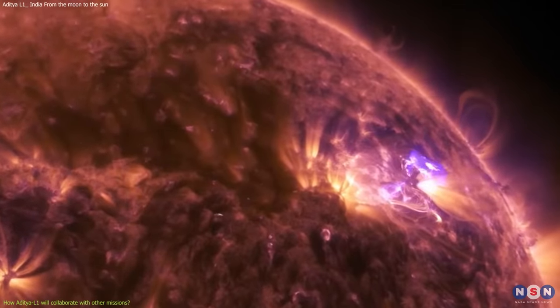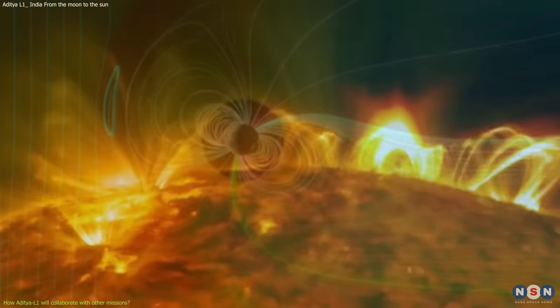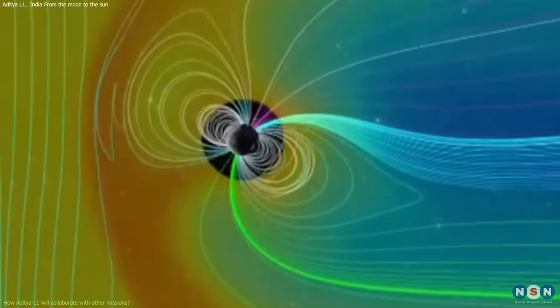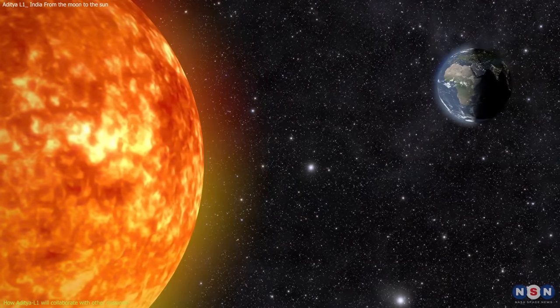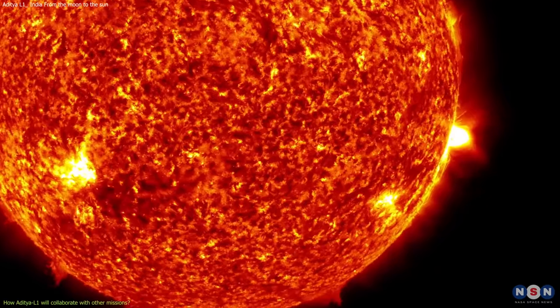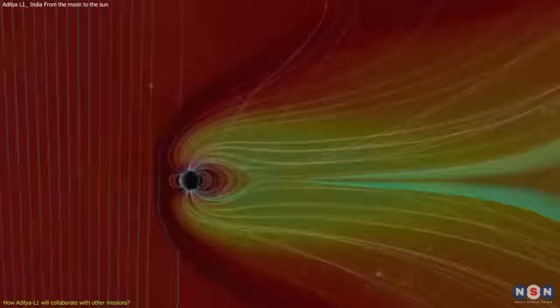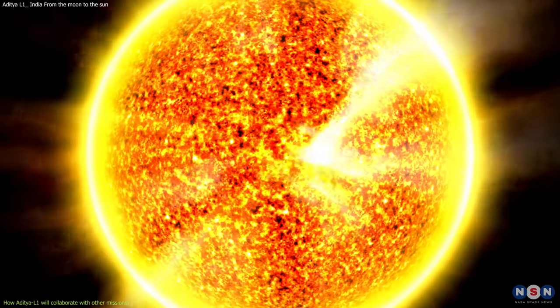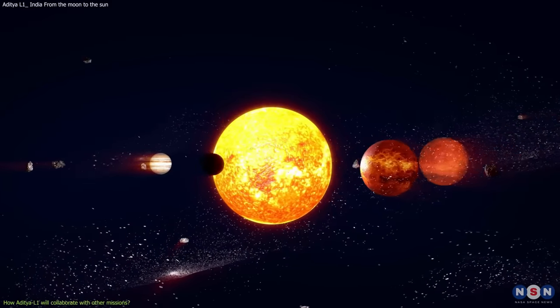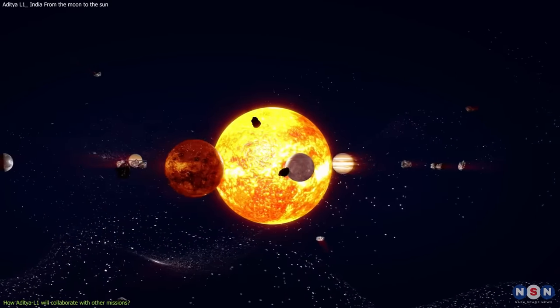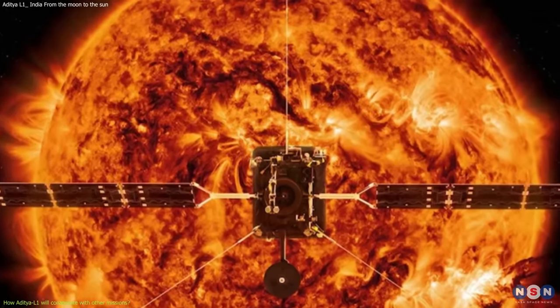Solar physics and space weather are important fields of research that aim to understand how the Sun works and how it affects our planet and our technology. These fields have many applications and implications for science, society, and humanity, such as developing new sources of clean energy, enhancing our space exploration capabilities, or protecting our planet from solar threats. But studying the Sun is not an easy task. It requires a lot of data and observations from different perspectives and wavelengths. No single mission or observatory can provide a complete picture of the Sun and its effects.